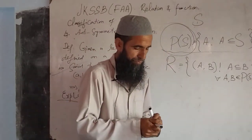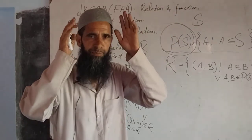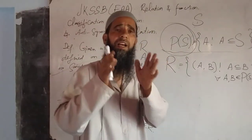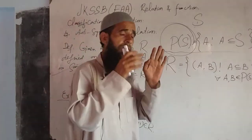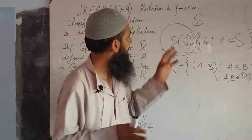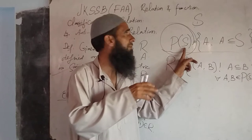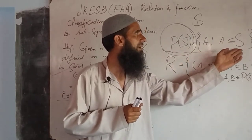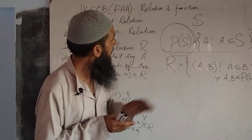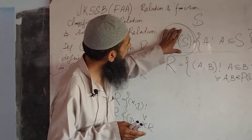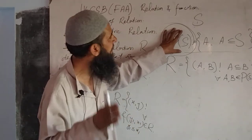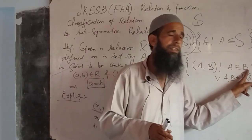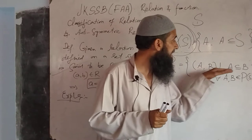Dear students, if we have a set S, then we have subsets of that particular set S. The set of subsets of a given set is called the power set. Remember this definition. The power set is denoted by P of that particular set — here P of S. P of S contains all A such that A is a subset of S — it contains all subsets of S. Now on this power set P(S), we define a relation R: (A, B) will be an ordered pair in this relation given that A is a subset of B, for all A, B belonging to P(S).